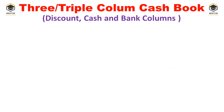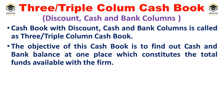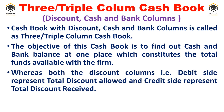When you come to the triple column or three column cash book, the three columns refer to discount, cash, and bank. All three columns are available in one cash book. The object of this cash book is to find the cash and bank balance at one place, which constitutes the total funds available with the firm. The discount columns on the debit and credit sides represent total discount allowed and total discount received respectively.